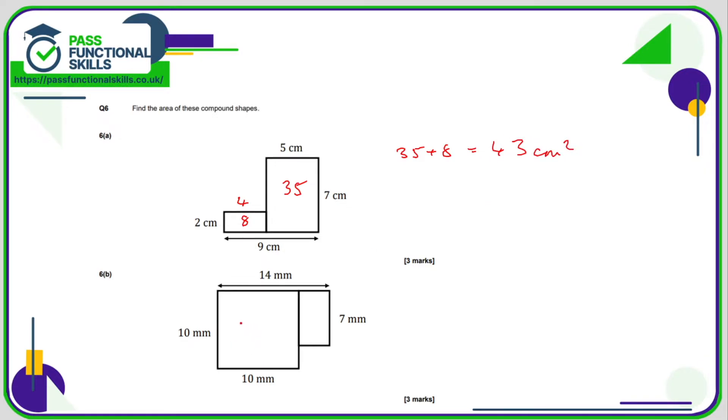Here we've got 10 times 10, which is 100. And here we've got 7 by, well, if it's 14 across the top and 10 from here to here, then this must be 4. So 7 4s are 28, so that is a total of 128 millimetres squared.